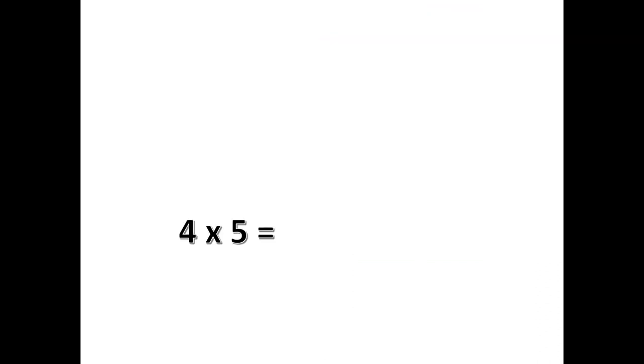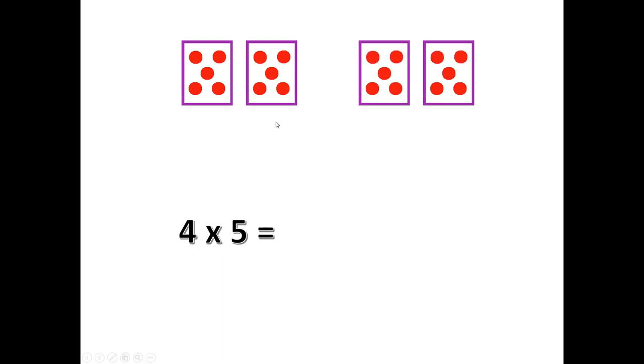For the last one in this lesson, 4 times 5. See if you can beat me to it. Double 5 for 10. Double 10 for 20. 4 times 5 is 20.